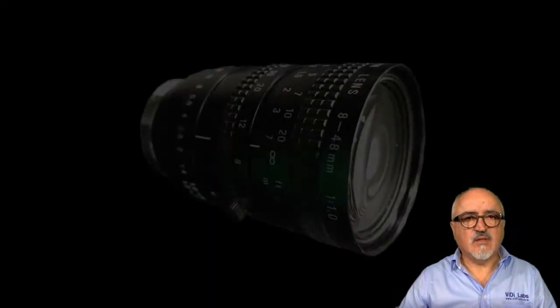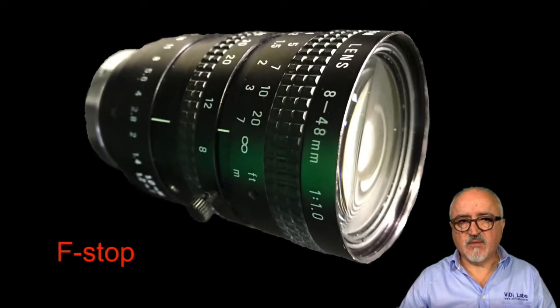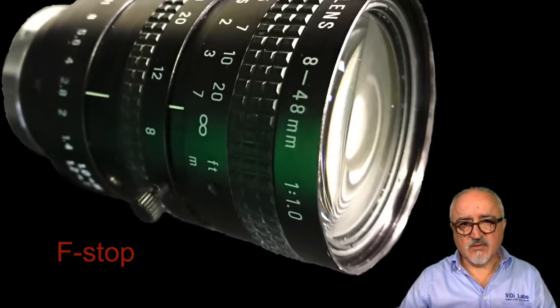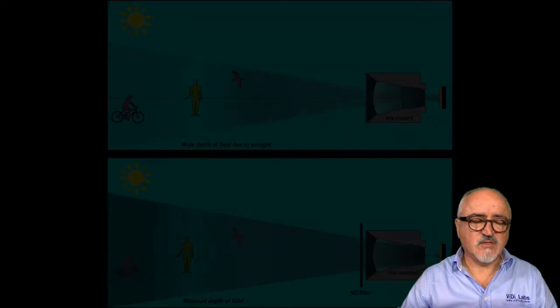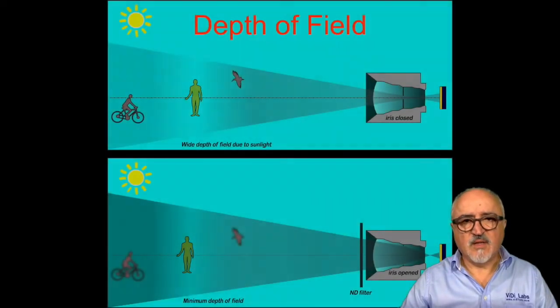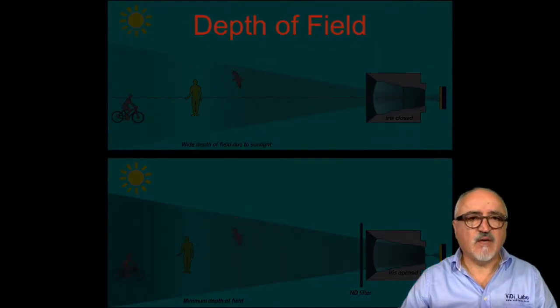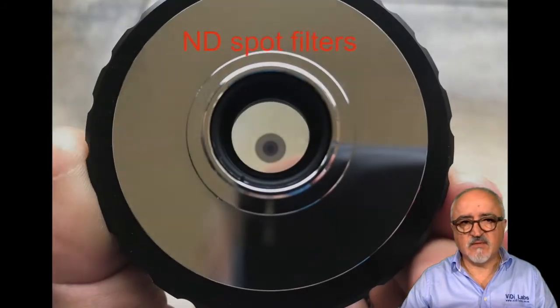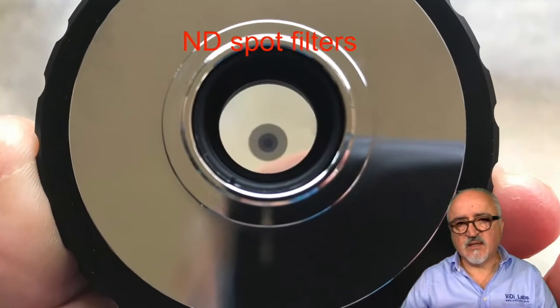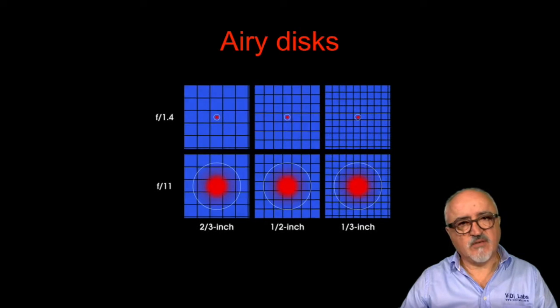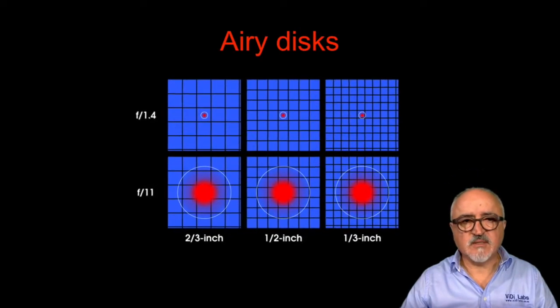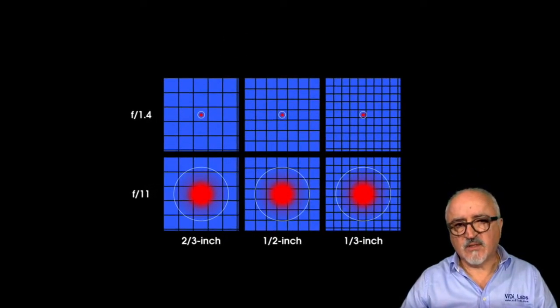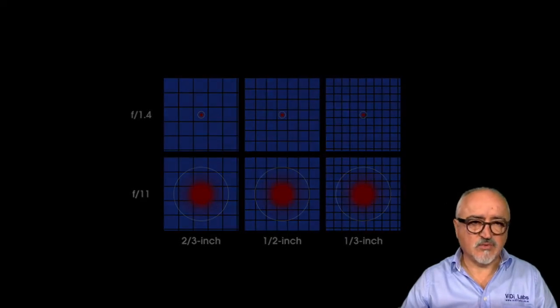In this lecture I will talk about the f-stop of a lens, what it means and how it is measured. I will also explain the depth of field, which is a direct result from f-stop. Then I will talk about the specific ways of how f-stops are pushing the limits of optics in CCTV by use of internal ND spot filters. I will also explain the ARI discs, which is directly connected to the f-stop and pixel size and their effect on picture quality in CCTV. And finally, I will touch on the meaning of P-iris in CCTV.